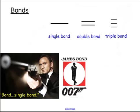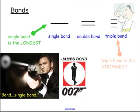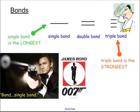Let's take a look at chemical bonds. We have a single bond, a double bond, and a triple bond. The single bond is much longer than the double or triple bond; the triple bond is the shortest. The single bond is the longest bond we have, but the triple bond is the strongest because there are three of them. Bond order: a single bond has bond order one, a double bond has bond order two, and a triple bond has bond order three. Know which one is longer, which is stronger, and the bond order.